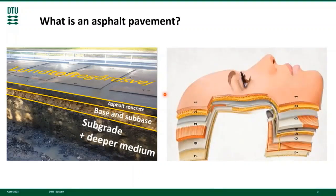Similar to pavements, humans are also layered. Here is an example for a human head. As you can see, it is composed of several layers from surface inward. We have skin, superficial fat, superficial muscles, retaining ligaments, deep fat, outer bone membrane, and bone.